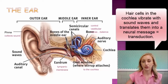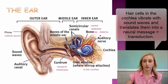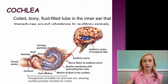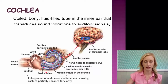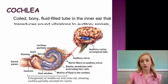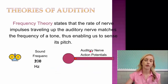The hair cells transduce — or translate — the sound wave into a neural message that the auditory nerve then carries to the thalamus. The cochlea is a coiled, bony, fluid-filled tube in the inner ear that transduces sound vibrations to the auditory system. If it were uncoiled, you'd see the basilar membrane with protruding hair cells. The signal is then sent to the thalamus and the auditory cortex of the temporal lobe.